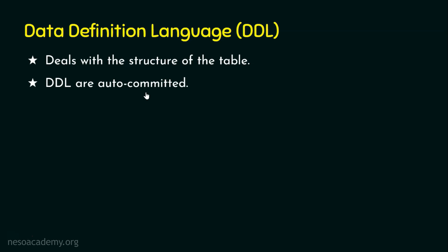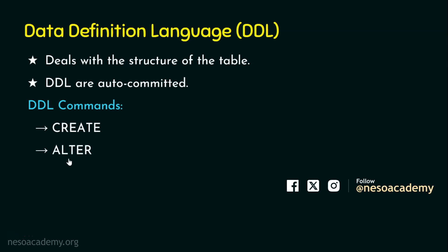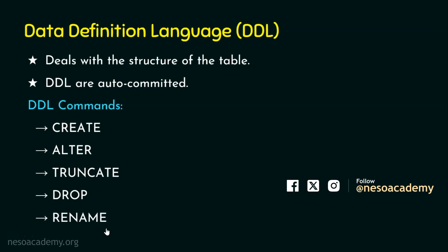I will elaborate on auto-commit in the TCL (Transaction Control Language) part, where you will understand how commit works, why we need it, and why we need to commit a transaction in DBMS. Now let's look at the various commands in DDL. The first is CREATE, the second is ALTER, the third is TRUNCATE, the fourth is DROP, and the fifth is RENAME. All five of these commands are part of DDL.